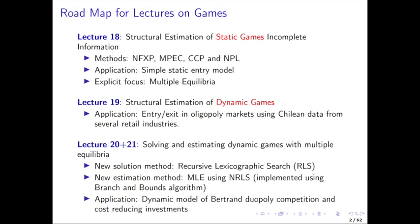On solving and estimating static games of incomplete information. This lecture is the first out of four on estimation and solution of games. We're going to start with the simplest possible case first, the static games. We're now in the world with multiple players that have strategic incentives, where one player's optimal choice affects the optimal choice of another agent, and there's going to be an equilibrium where all players are playing their best mutual responses. We're going to focus on a very simple case of a static entry model.